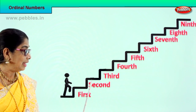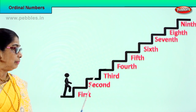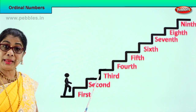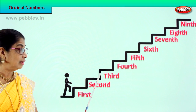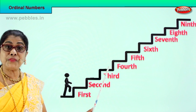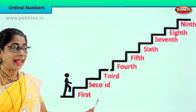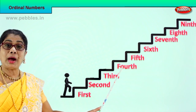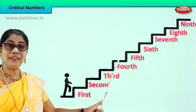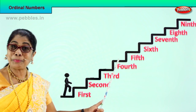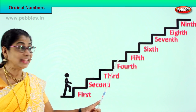He climbs on to the third step. First, second — now he climbs on to the third step. Spell third: T-H-I-R-D. Third. Then he goes on to the fourth step. How do you spell fourth? F-O-U-R-T-H. Fourth. Then he climbs on to the fifth step. Spell fifth: F-I-F-T-H. Fifth.